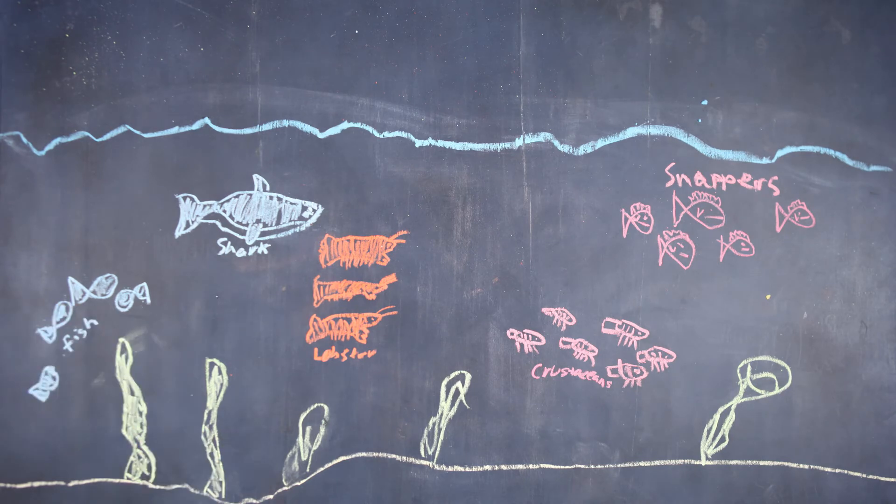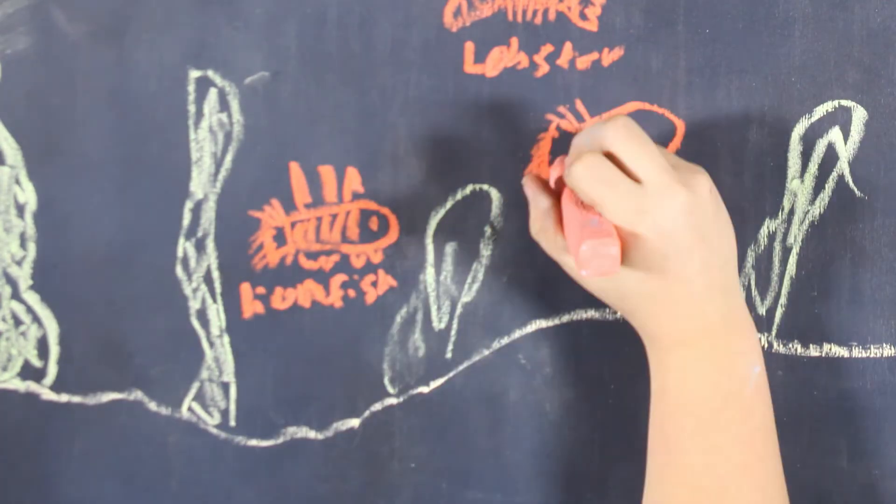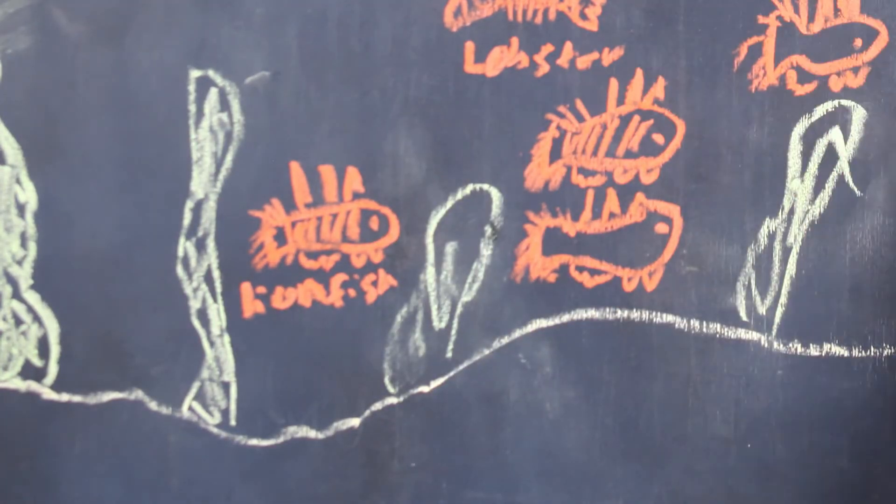But this ecosystem can become unbalanced from invasive species such as lionfish. Lionfish are a common invasive species. They are native to the Indo-Pacific, but they are found in the Atlantic Ocean near Florida.